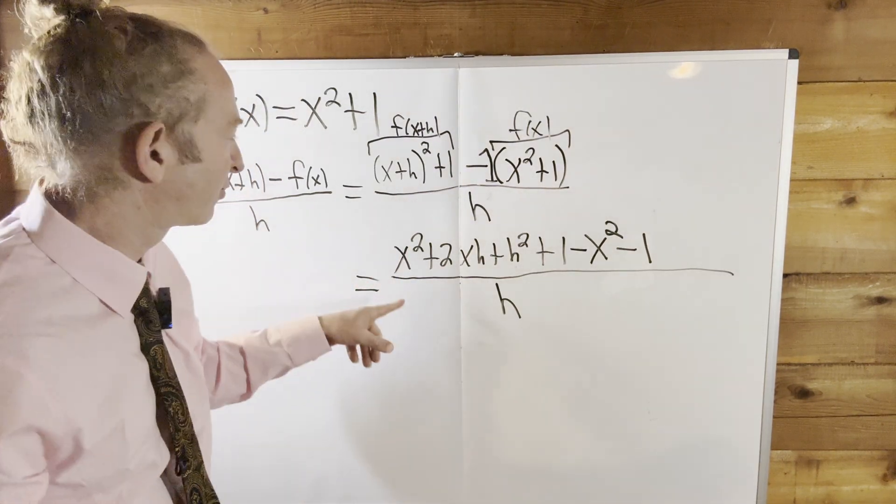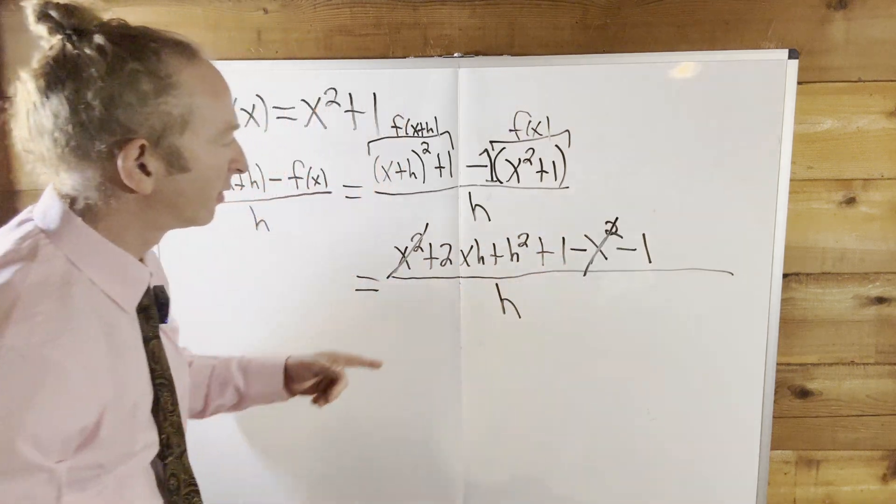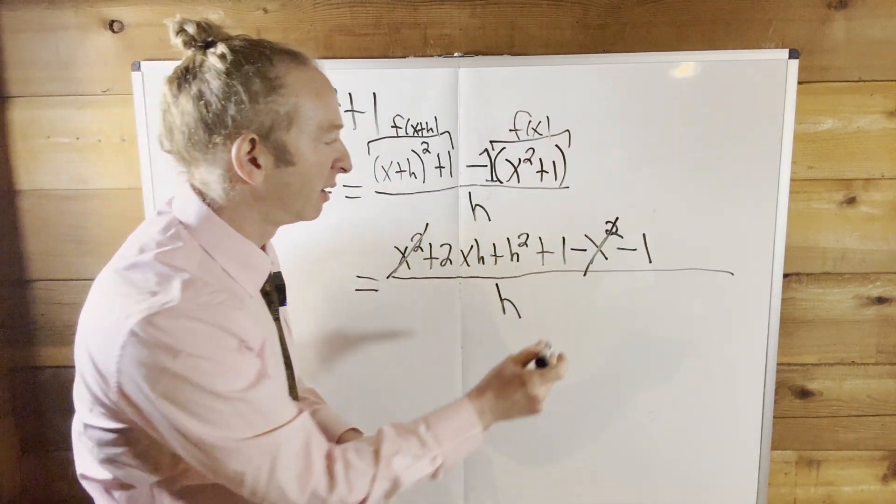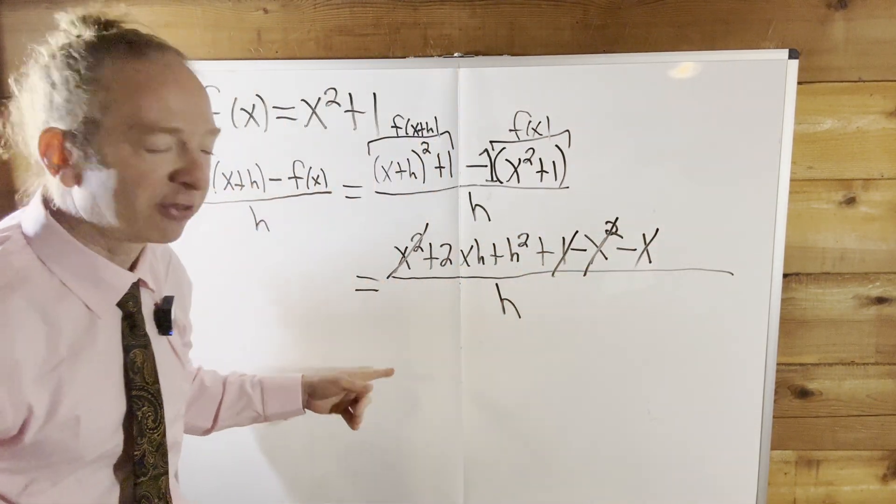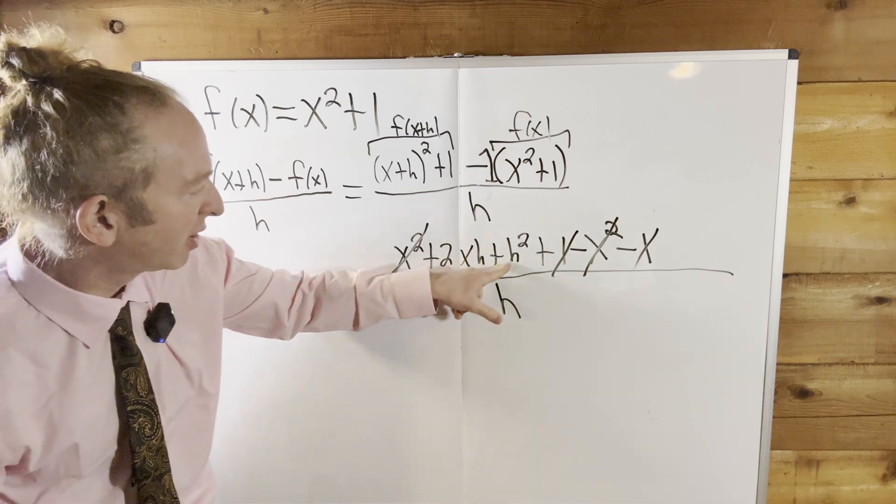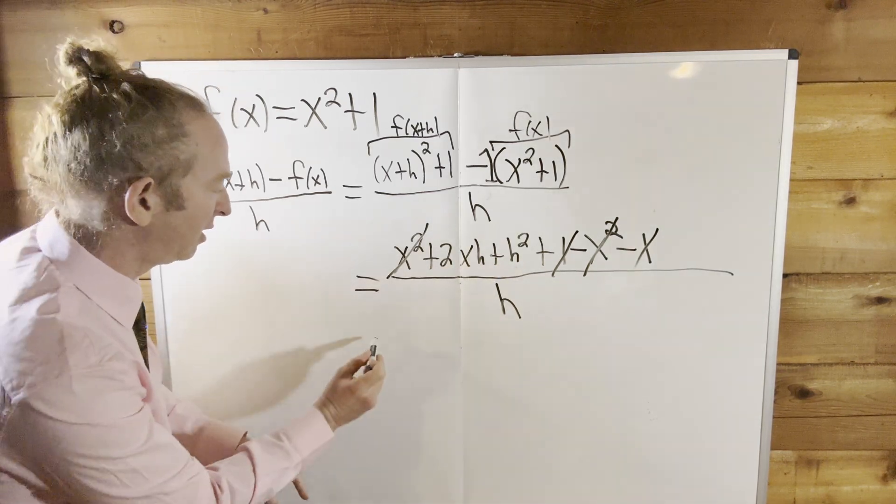And how do I know this? Just from doing these problems for years, right? So look. Boom! Gone. Game over. The 1? Gone. So what are we left with? We're left with 2xh plus h squared all over h, right? So I'm going to write it here.